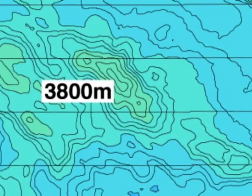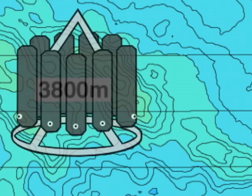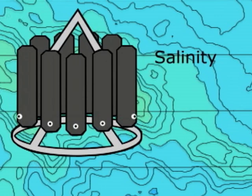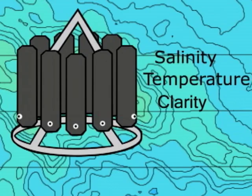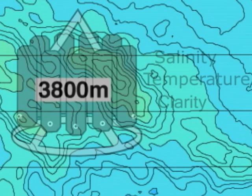Our first step was to lower instruments by a cable into the ocean. They measured the salinity, temperature, and clarity of the water to find evidence of plumes emitted from hydrothermal vents on the sea floor.